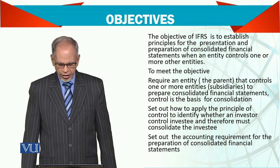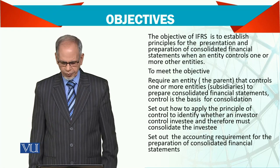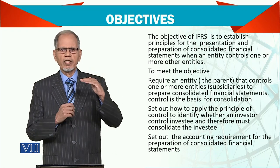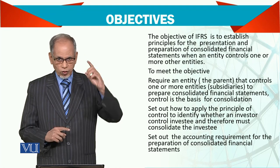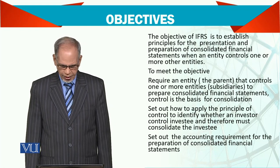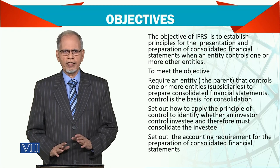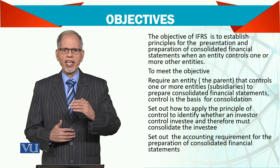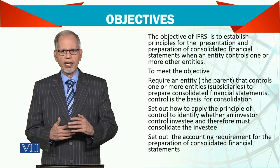To meet the objective, an entity — the parent, which is the main company taking care of other companies — that controls one or more entities must consolidate. There can be more than two, three, or four subsidiaries. Control is the basis for consolidation. The standards explain that control means being in a position to dominate policy-making.